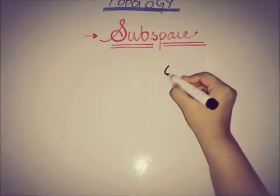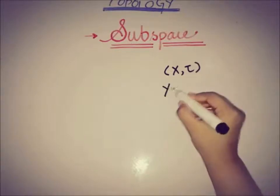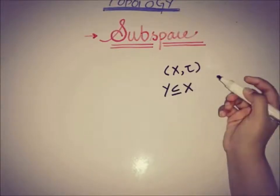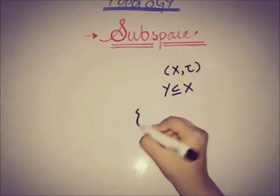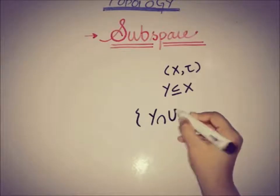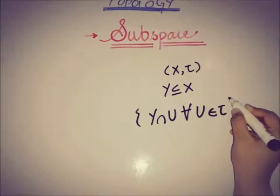If x and tau is a topological space and y is a subset of x, we define a collection of subsets such that y intersection u for all u belongs to tau.